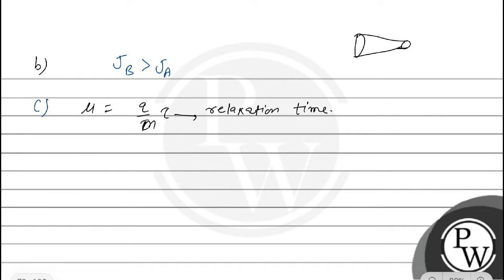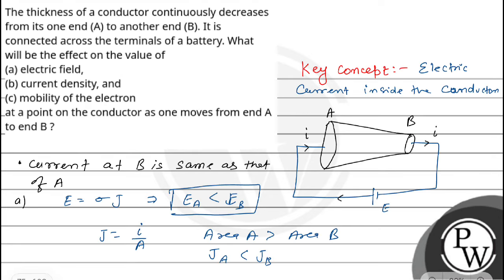So we can see the mobility, the charge, the mobility at A and B is the same. That is mu_B equal to mu_A. So yeah, this is the explanation of this question. Hope you understood it well.